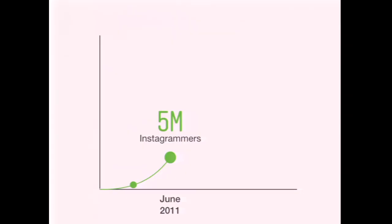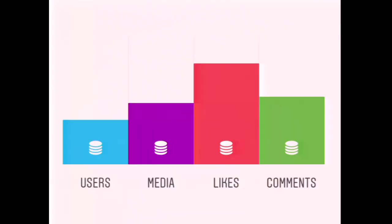By June–July 2011, Instagram had about five million users. All of their data was stored in PostgreSQL and accessed via the Django ORM. They did use vertical partitioning by model to allow storage in multiple databases — a database for users, one for media, one for likes, one for comments, etc. This kind of vertical partitioning is actually very easy to implement using the Django ORM's multi-DB support and routers.